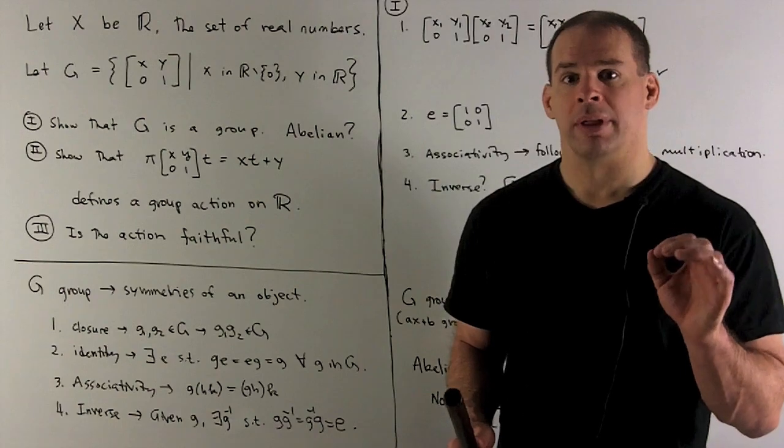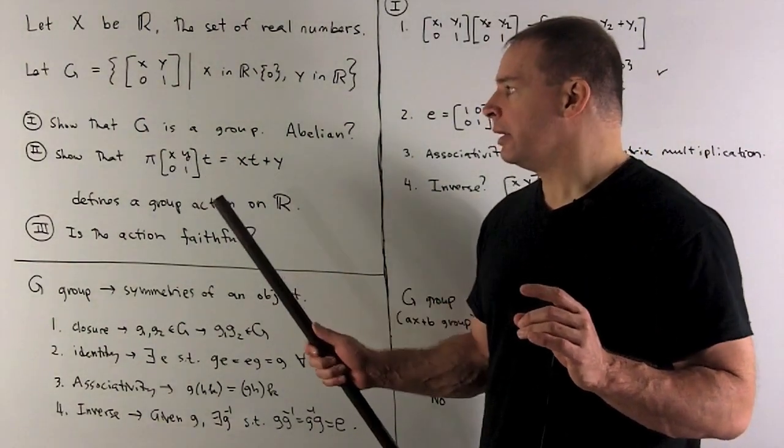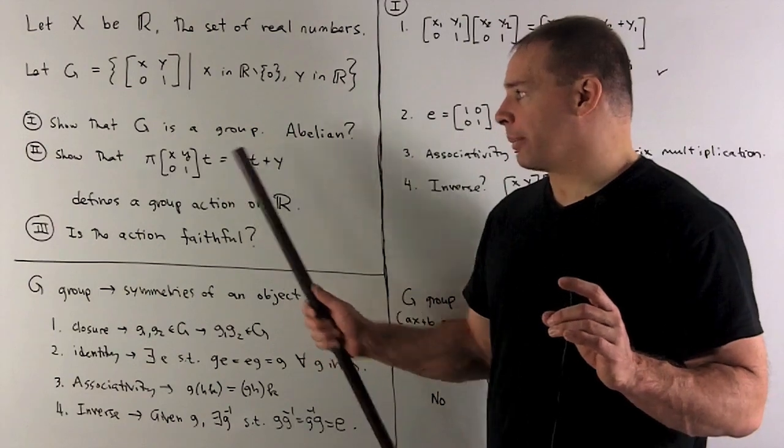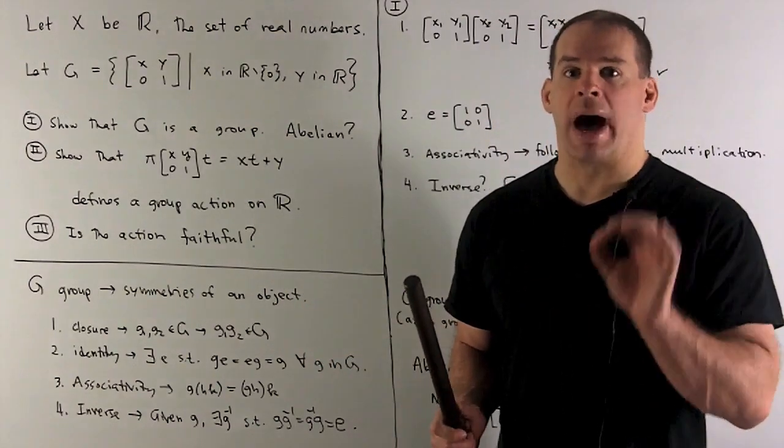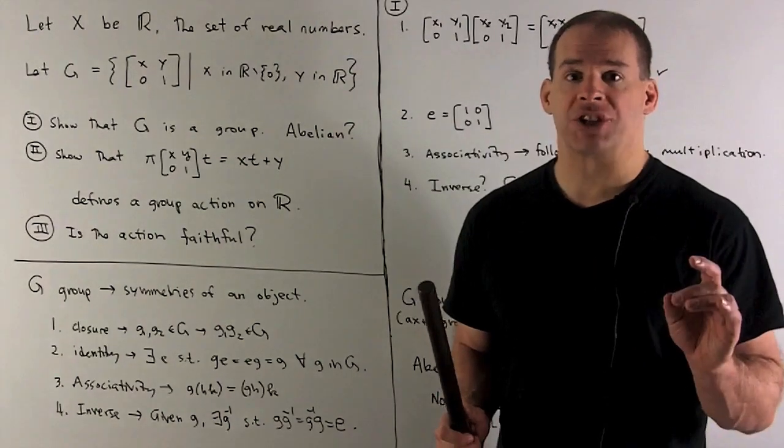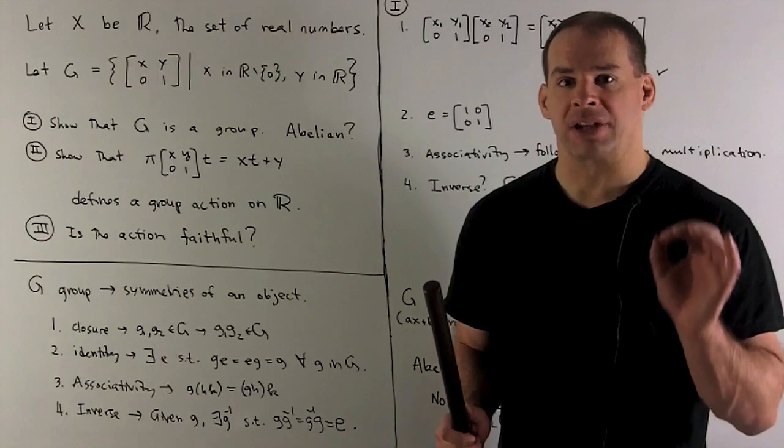Next, show that the action defined by the matrix X, Y, zero, one acting on the real number T, given by XT plus Y, is a group action. Then the question is, is that group action faithful?